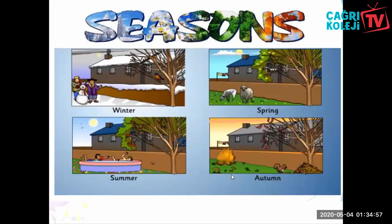My favorite season is spring, because when it comes, every place becomes green and it rains. It is not too cold, it is not too hot — it is warm. That's why it is my favorite season. Winter, spring, summer, autumn. What about you? What's your favorite season and why?